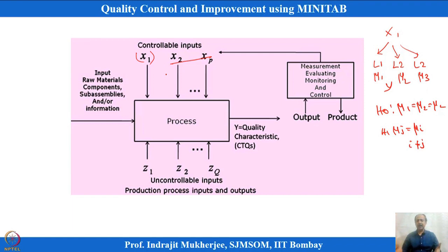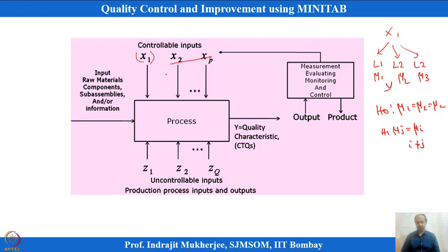When a factor has only two labels, we use the two-sample t-test or paired t-test. However, when a controllable factor has more than two labels, type 1 error can be controlled at 0.05 using analysis of variance. Two-sample t-test with more than two labels is not recommended. Analysis of variance was proposed by Ronald Fisher around 1921 and is still widely used in design of experiments.